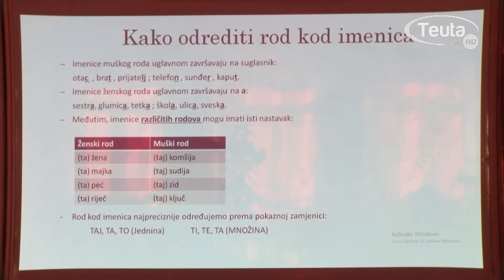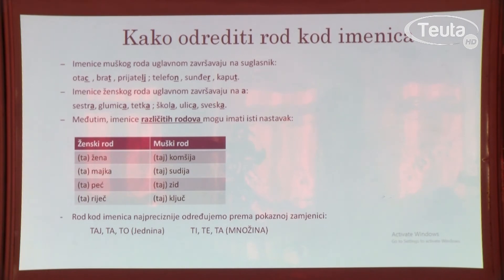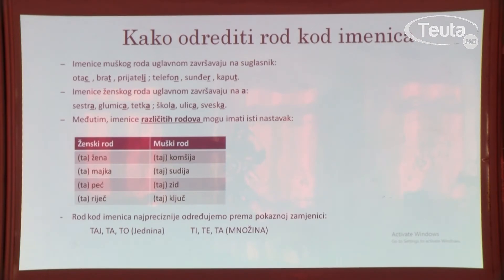U koloni ženski rod imamo imenice peć i riječ. Pomislit ćete zašto su ove imenice u koloni ženskog roda kada se završavaju na suglasnik Č? Međutim, ima i takvih imenica u crnogorskom jeziku – nije to veliki broj – ali te imenice slažu se sa pokaznom zamjenicom ta: ta peć, ta riječ, kao što se imenice muškog roda završavaju na suglasnik: zid i ključ. Rod kod imenica najpreciznije određujemo prema pokaznoj zamjenici taj, ta, to za jedninu; ti, te, ta za množinu.